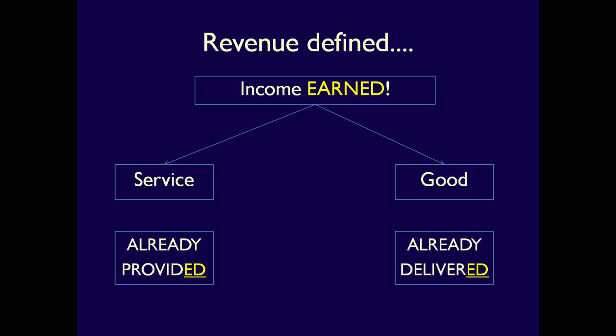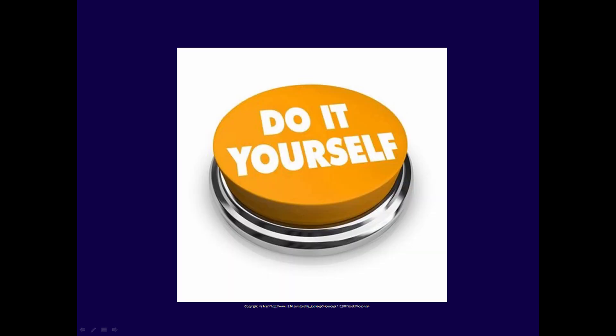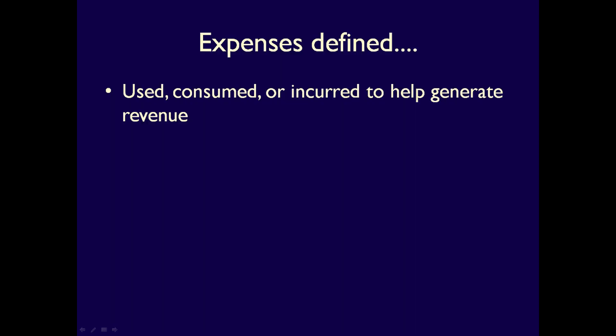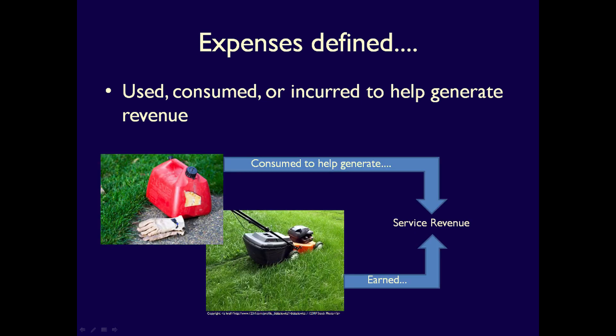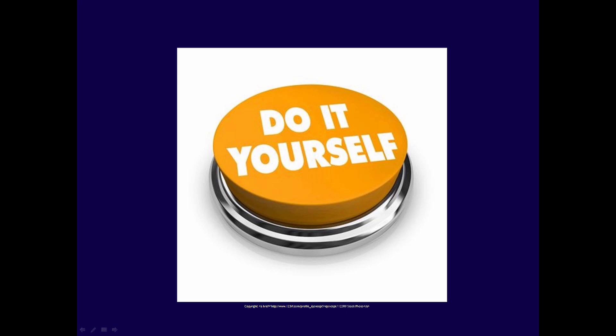To summarize, revenue is income earned through the day-to-day activities of a business when a service or a good is provided. If you have a job that earns you income, then you know what your revenue is. The last financial reporting element to define is expense. Expenses are the cost of the resources that are used, consumed, or incurred to help generate revenue. For example, if you use gas in a lawn mower when you mow a customer's lawn, the gas consumed during the mowing would be an expense — a cost of earning revenue. Costs or expenses must be matched to the revenue they helped to generate.